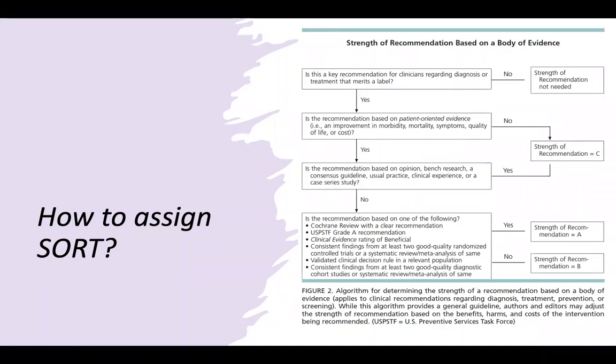If you say it does have patient-oriented evidence, then you can go to the next step and say, is it based on opinion? Is there benchmark research? Is there consensus guidelines? If there is, then again, you go back to the strength of recommendation being a C. But if not, then you look at the quality of the study, such as: is it a Cochrane review? Is it with a clear recommendation? Is it based on the USPSTF grading recommendation? Is there consistent findings? Is there validated clinical decision rules? If so, then you can basically probably say it's going to fall anywhere between an A and a B, and then based on that, you can grade that study.